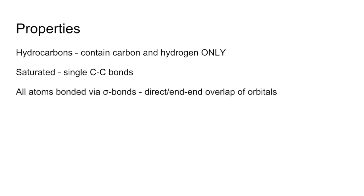All of the atoms are bonded via sigma bonds, so that's where the orbitals that contain the electrons overlap directly or end-to-end. Because of that kind of overlap, sigma bonds allow free rotation.